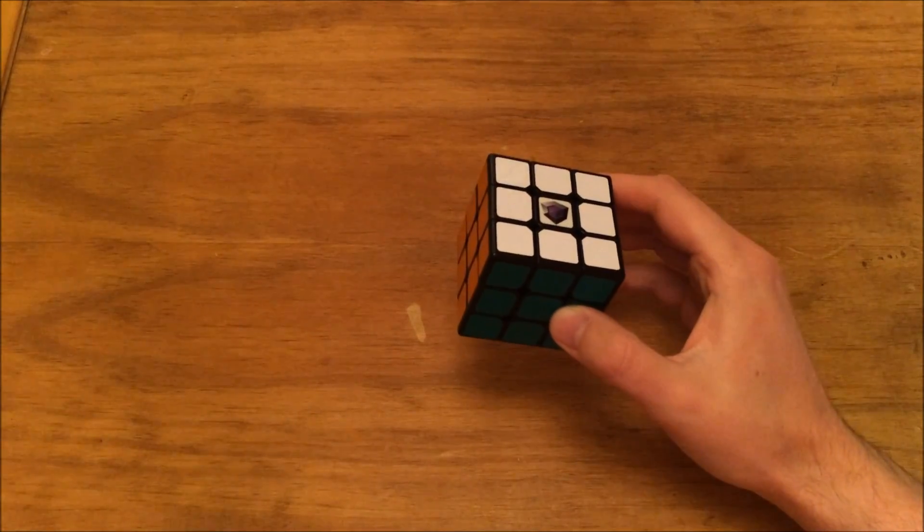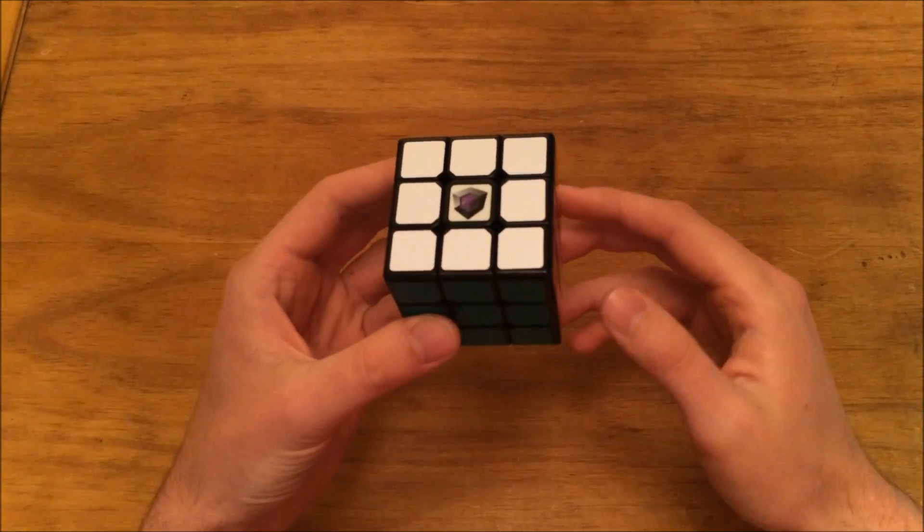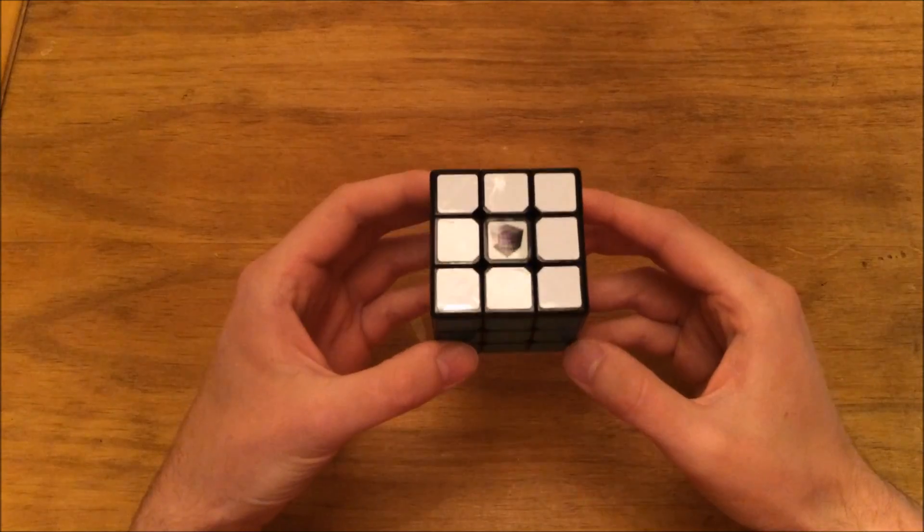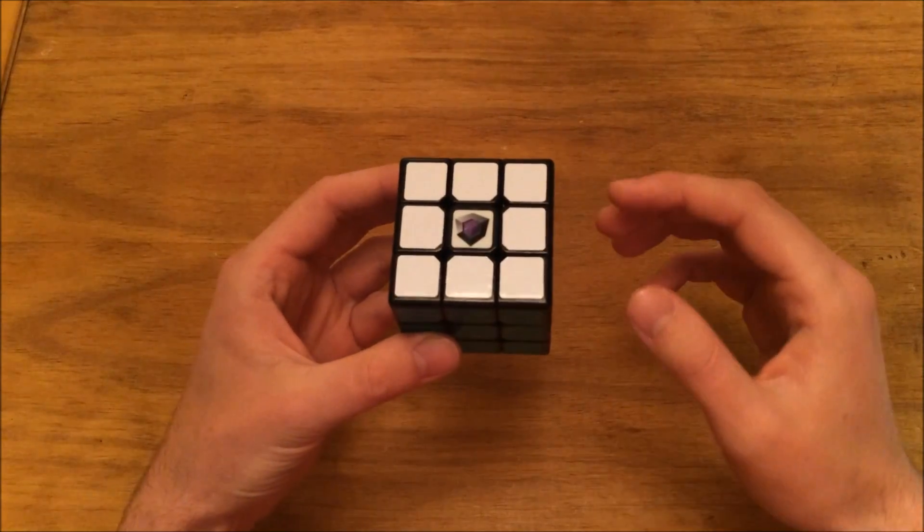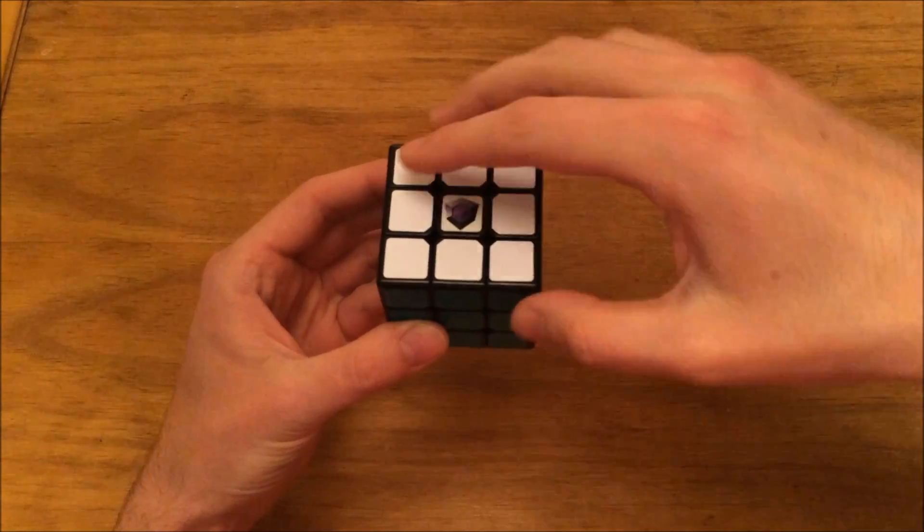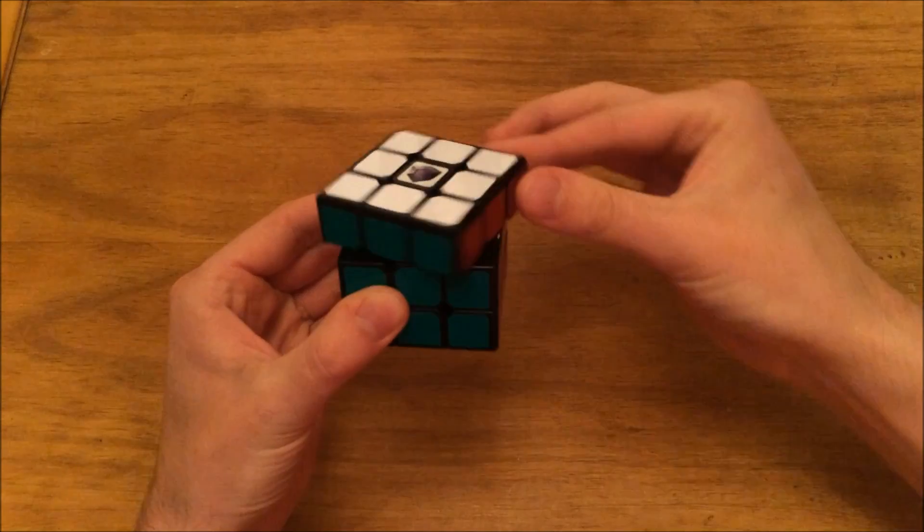When you're looking at a cube, there are six different types of moves. Each face is designated by a letter when you're looking at the scramble. For example, here we have our top layer, which is going to be this layer right here. That's our top layer.